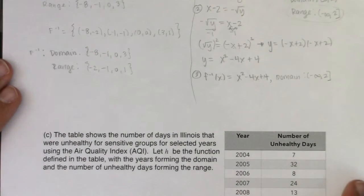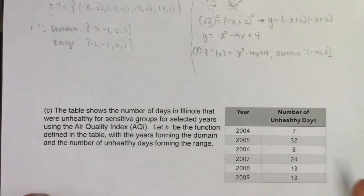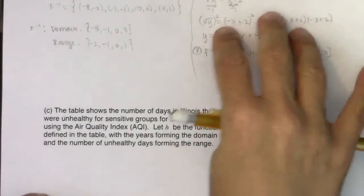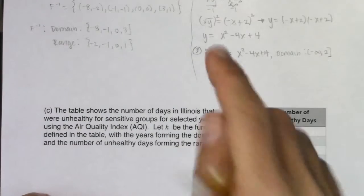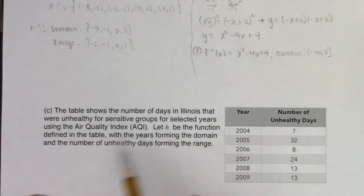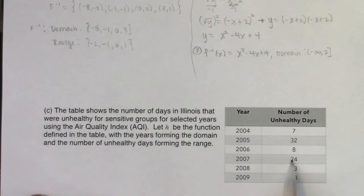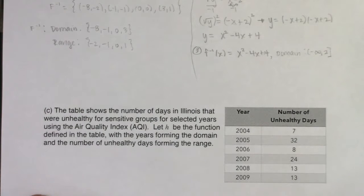So in part c, we've got another numerical example — a bunch of ordered pairs. The table shows the number of days in Illinois that were unhealthy for sensitive groups for selected years using the AQI. Let H be the function defined in the table, with the years forming the domain and the number of unhealthy days forming the range. So in 2004, Illinois had seven days that were unhealthy in terms of air quality. In 2005 they had a rough time — 32 days of unhealthy air. It looks like 2007 was another bad year. So 2004 and 2006 were good, 2005 and 2007 were bad, and 2008 and 2009 were in between.